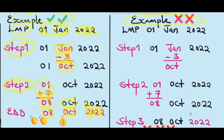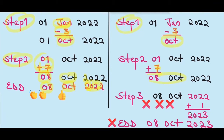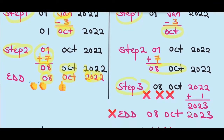In this wrong example, I'm going to use the same LMP, 1st January 2022, but I'm going to add 1 to the year to show why it's not necessary to add 1 to the year all the time. Step 1: subtract 3 from January, giving us October. Step 2: add 7 to the day, giving us 8th October. In this example, I've added 1 to the year, which gives us 2023 — so the EDD comes to 8th October 2023. That does not make sense. That means the woman is going to carry the pregnancy for 18 months. You do not add 1 to the year all the time; you have to evaluate the exercise in front of you and see if it makes sense.